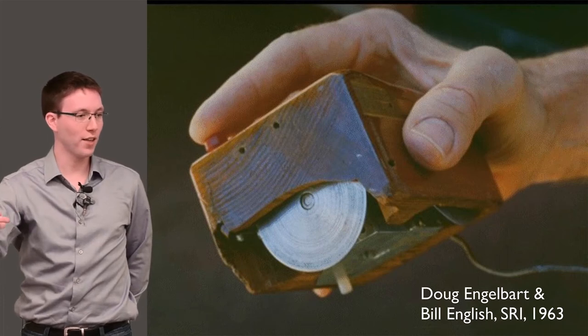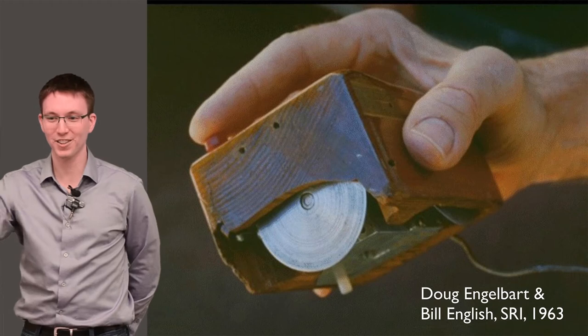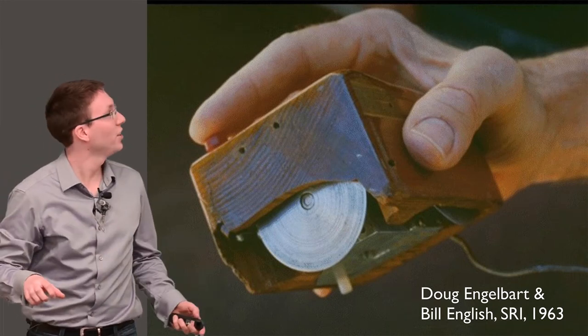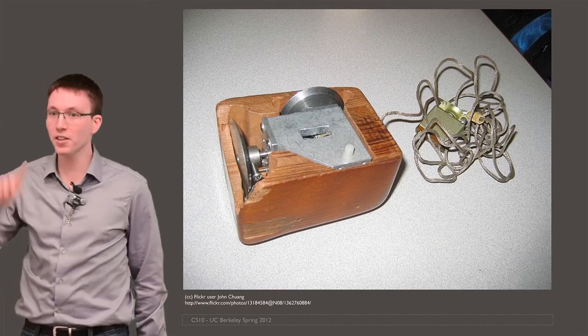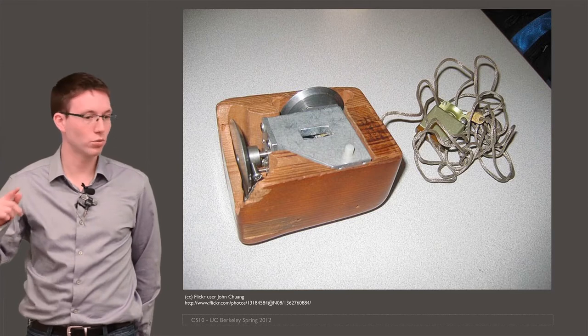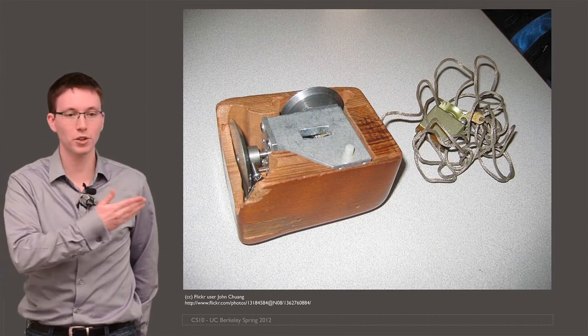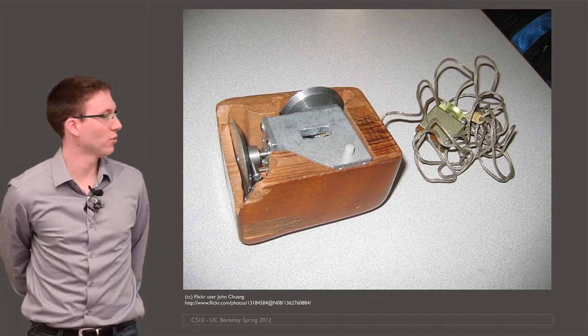And if you moved it in the X direction, the X wheel would track and the Y wheel would scrape. Here's a view of the bottom, just to see those two wheels. And basically, these wheels would then drive shaft encoders that would just relay a signal back to a computer how many units the wheel moved in one direction versus the other.